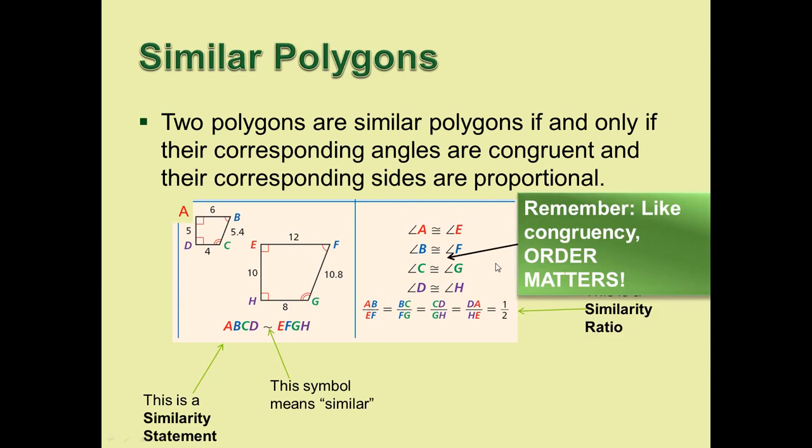Remember, order does matter. If I write ABCD and EFGH, then if B is the second letter, F is going to be the second letter as well, and B and F are congruent to each other because they're angles.